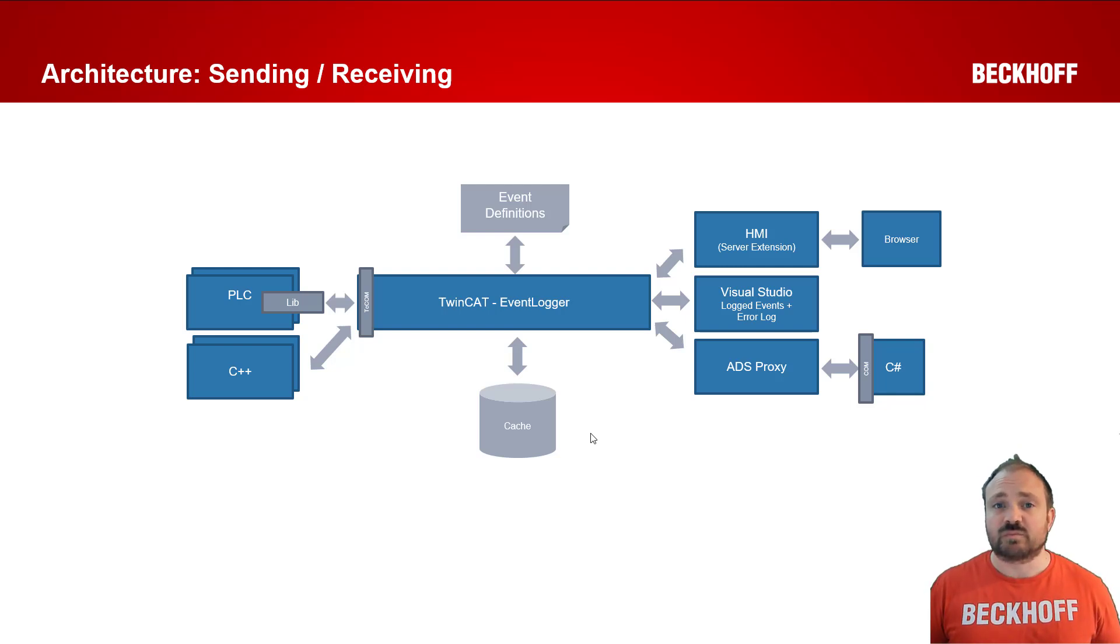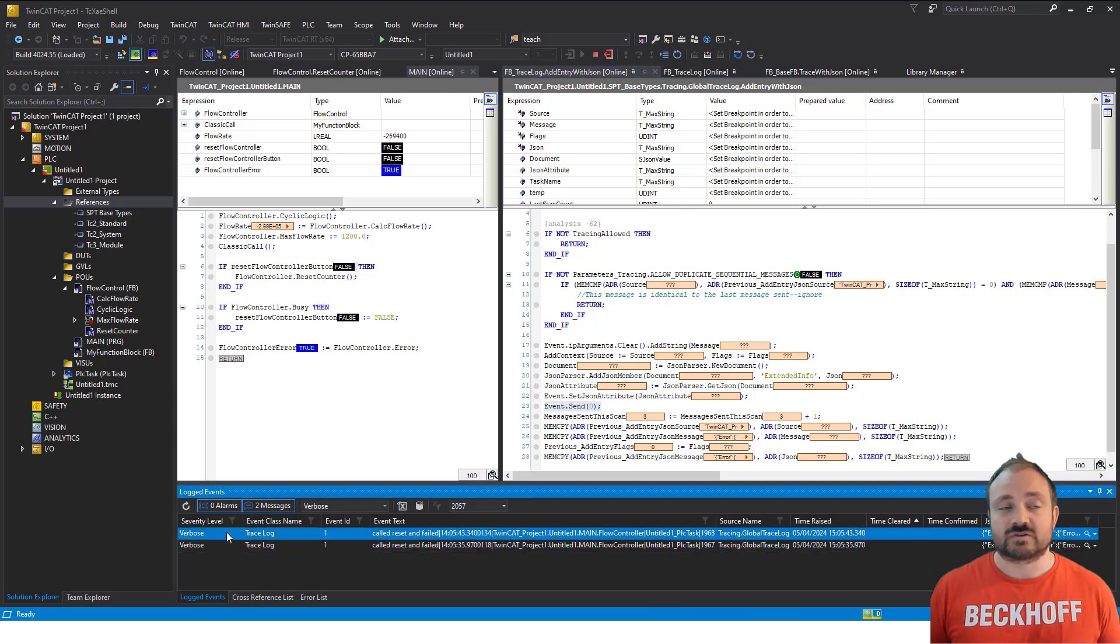Finally we can access it via the log window, which is what we were using in the previous two videos to check the results of our tracing. If you remember when we called the reset counter we got the trace message saying that it started, and when we posted the success/failed boolean flags we got another message showing us whether it passed or failed the operation. So that's the message side of things.